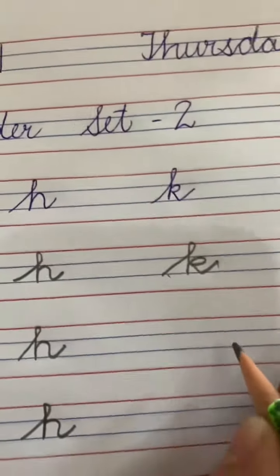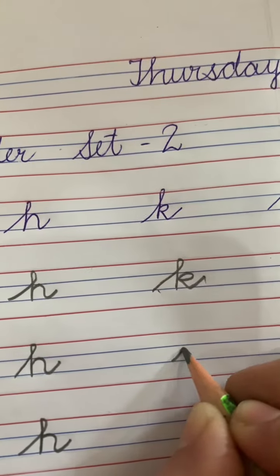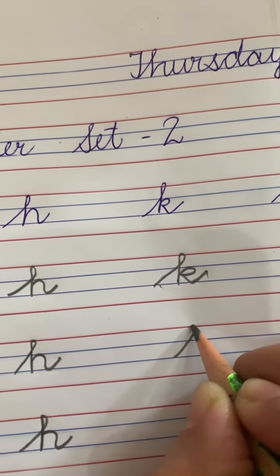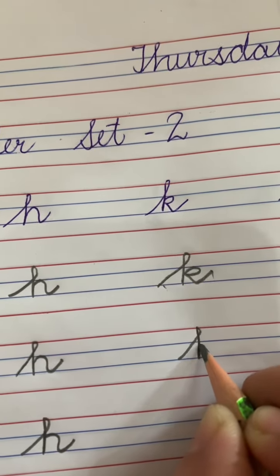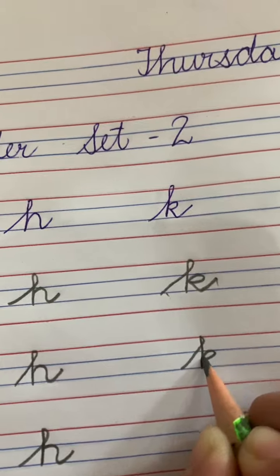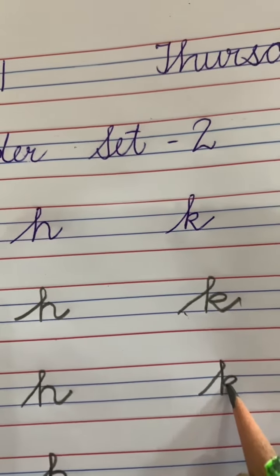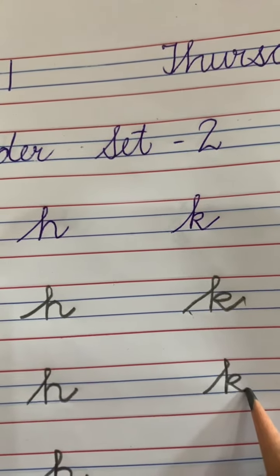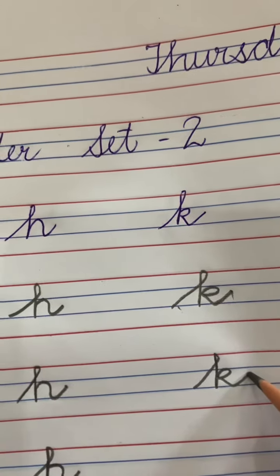How to write K? Slanting line, go up, make a turn, make standing line. Now make a curve like this, round it. Now with this curve, go upside, make a tail like this, K.